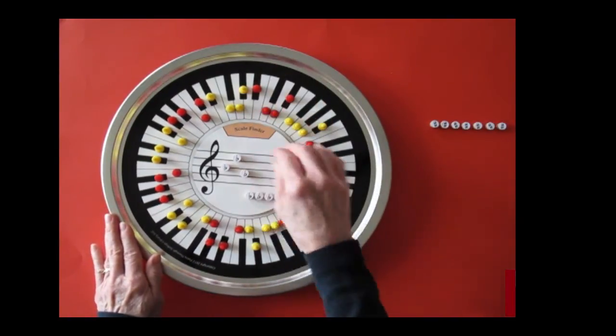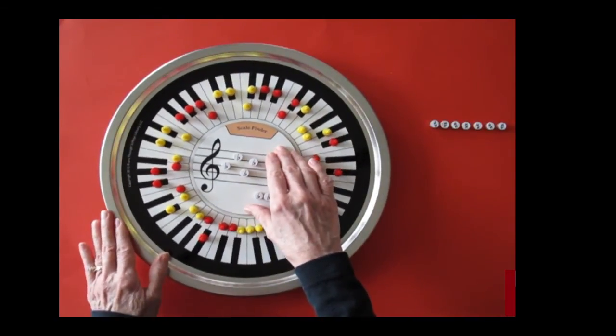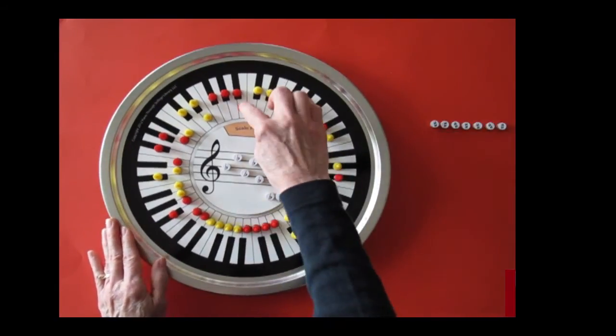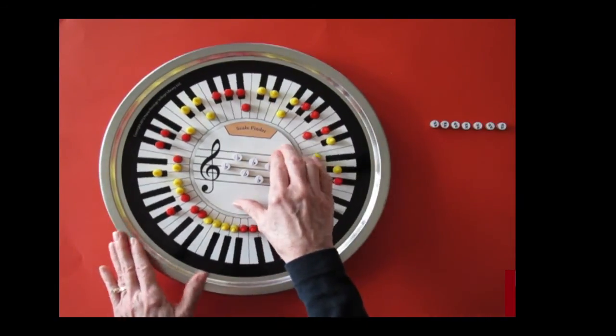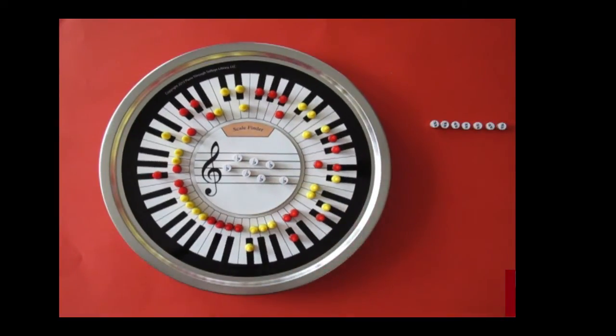The new flat for each of the key signatures is always the fourth step of the scale. For G flat major, the white key flat, C flat. For C flat major, the white key flat, F flat.